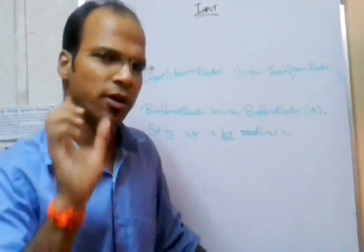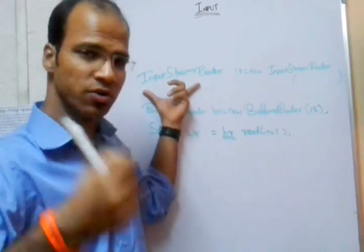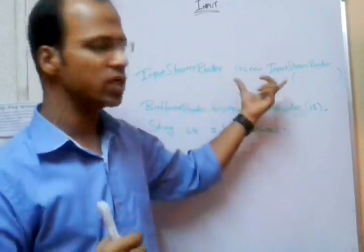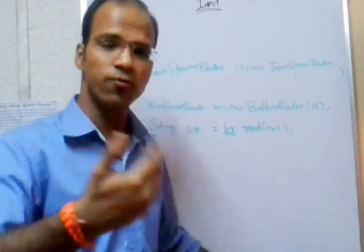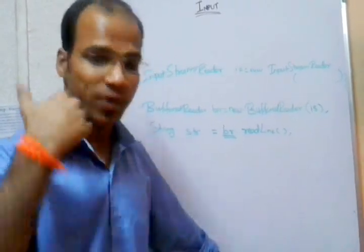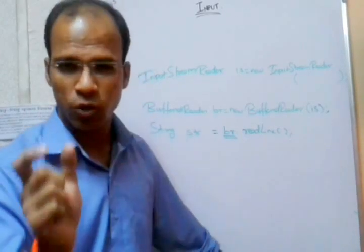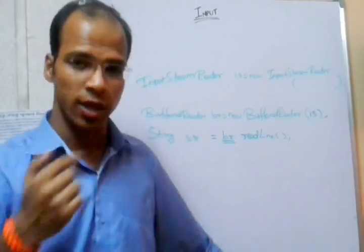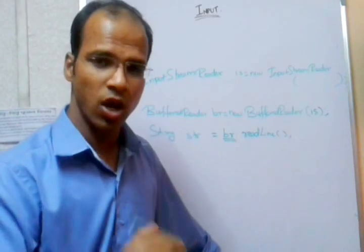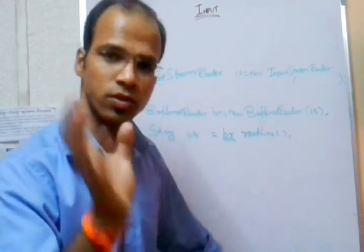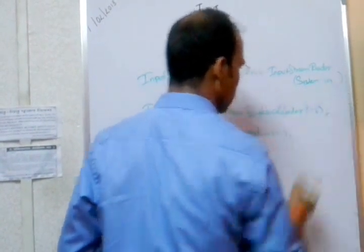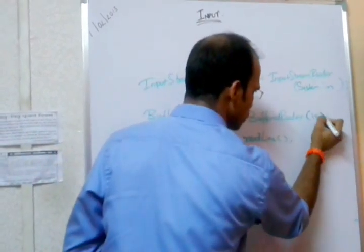Now the InputStreamReader will convert your input into stream format, but the question arises: from where are you getting input? The input we are getting is from the system - you are taking input from the keyboard. Just like when you print something it is system.out.println, which uses the system's output device, in the same way when you talk about input you are taking from the keyboard - the system's input device. So you define it as system.in, and you pass System.in into InputStreamReader.